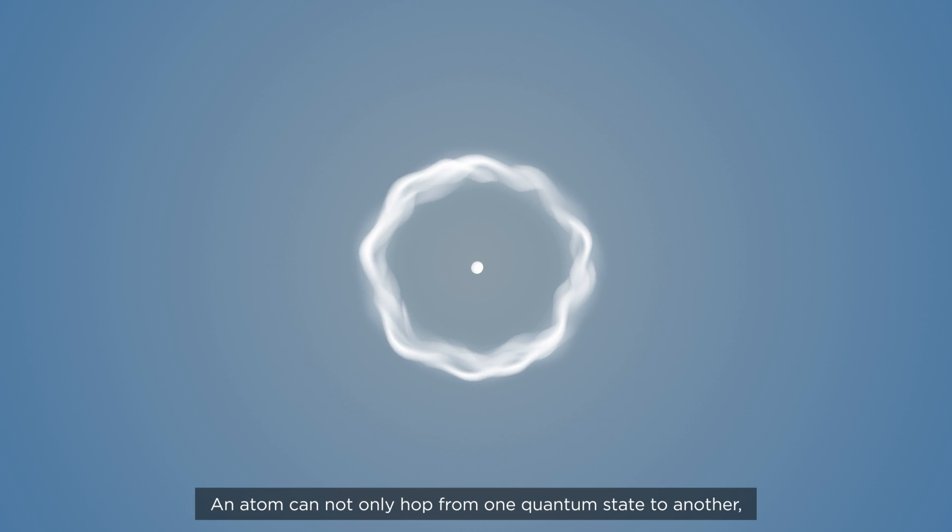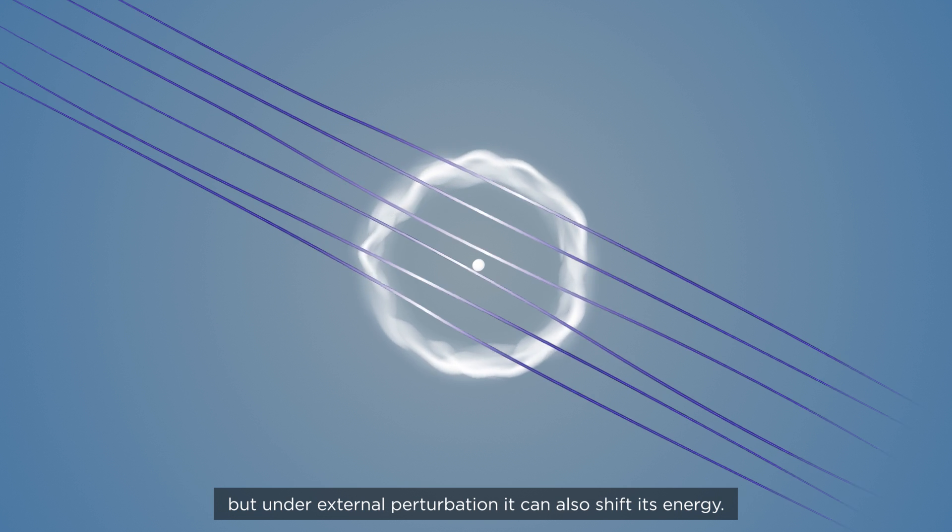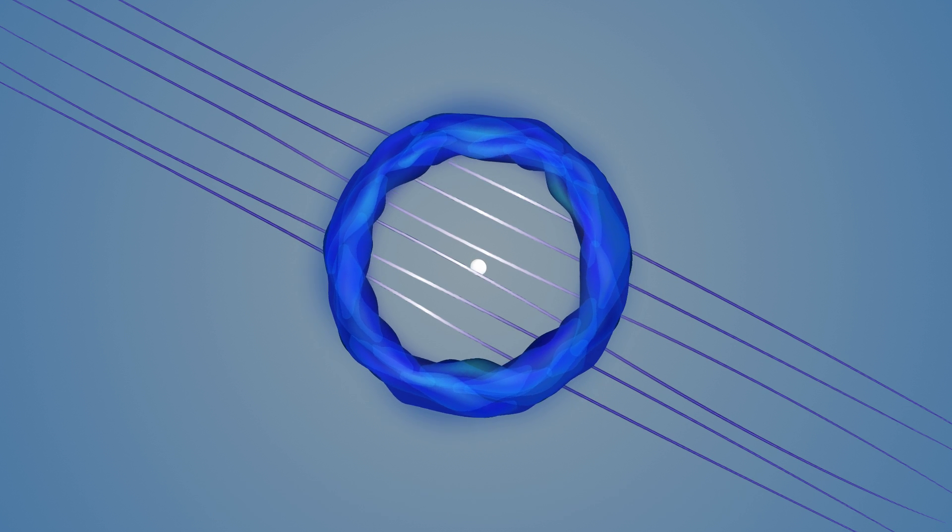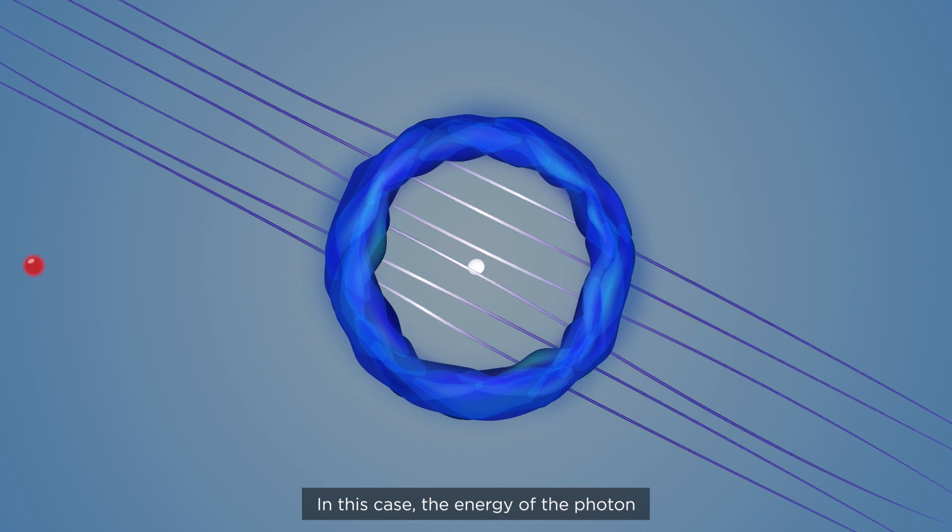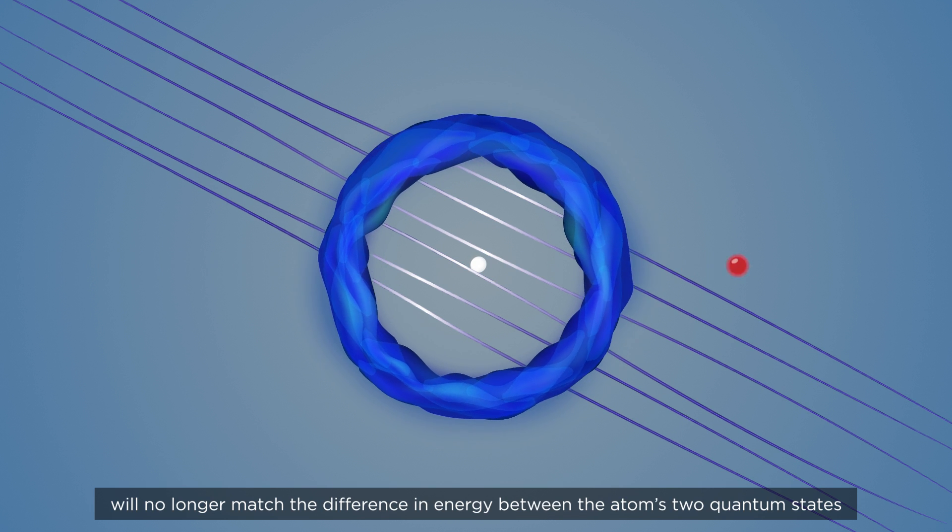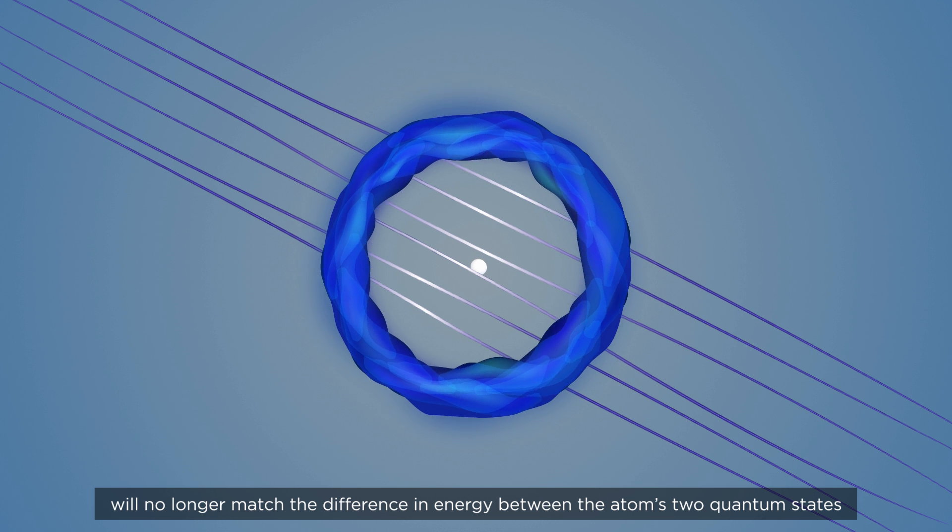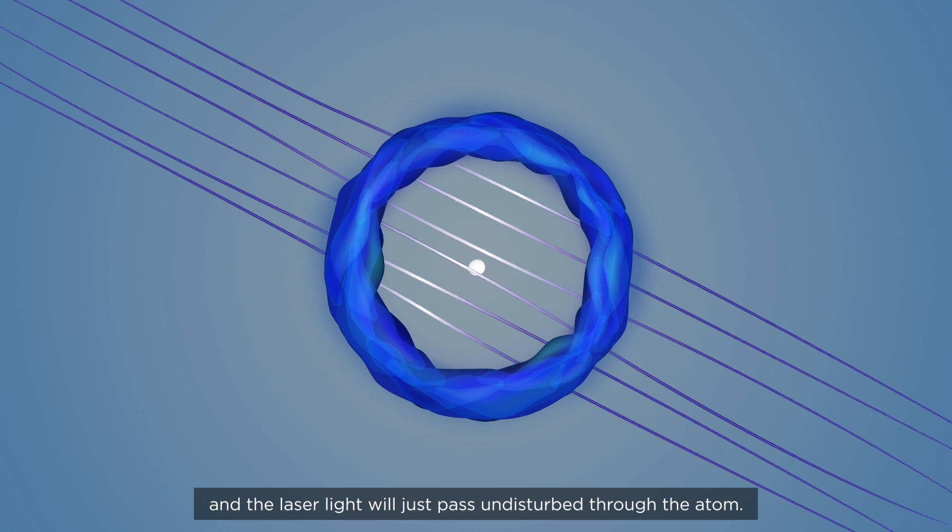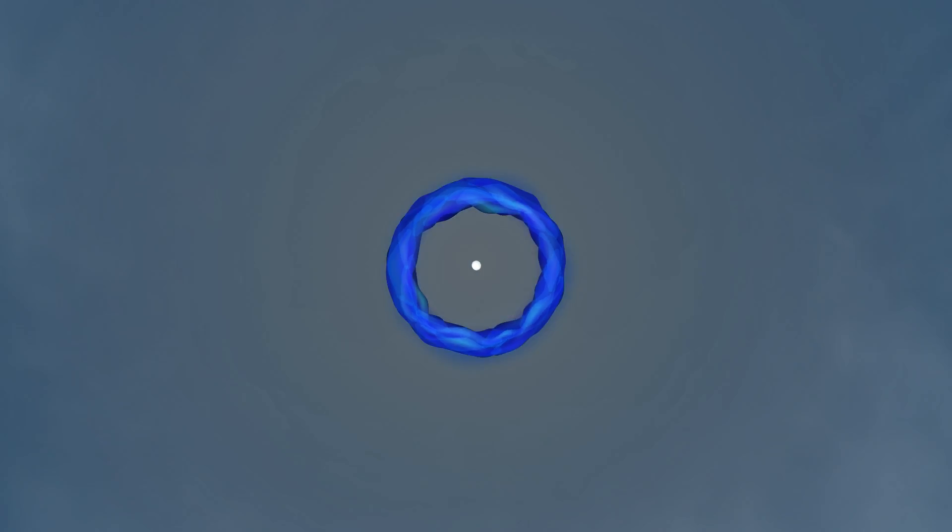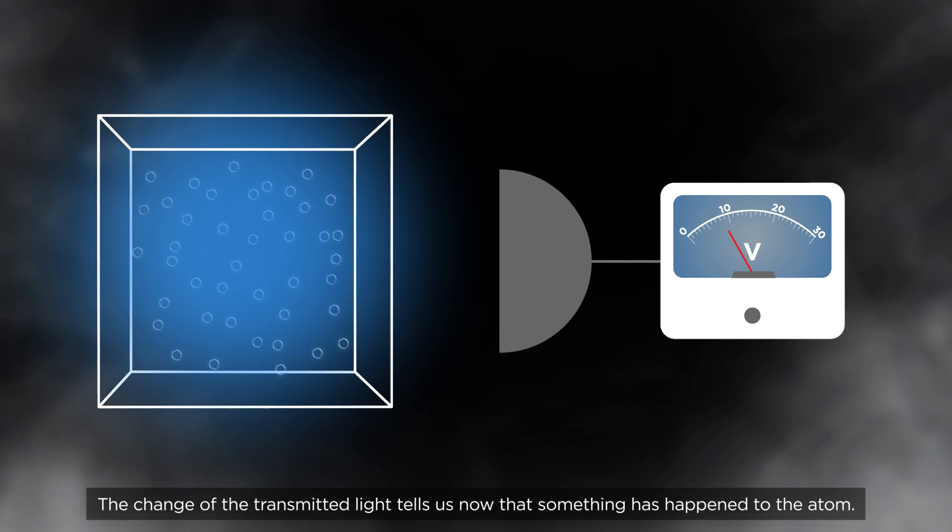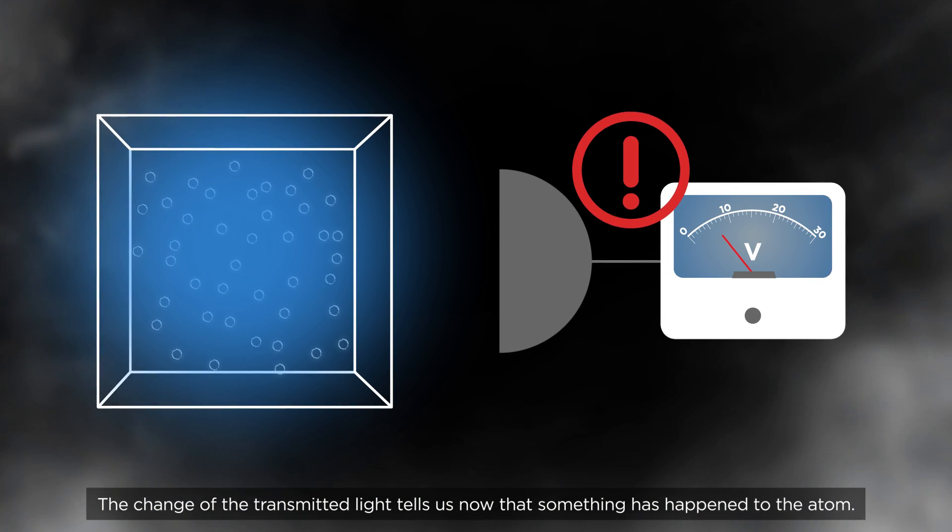An atom can not only hop from one quantum state to another, but under external perturbation, it can also shift its energy. In this case, the energy of the photon will no longer match the difference in energy between the atom's two quantum states, and the laser light will just pass undisturbed through the atom. The change of the transmitted light tells us now that something has happened to the atom.